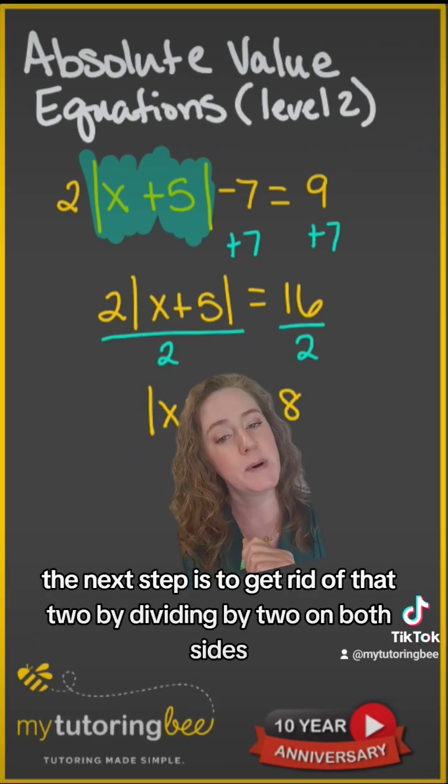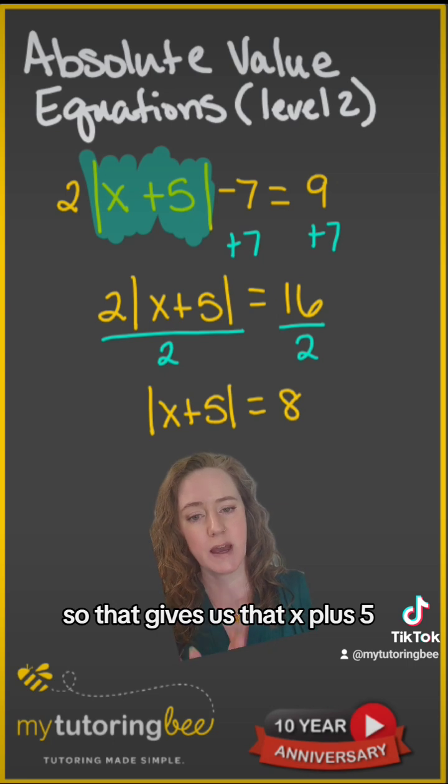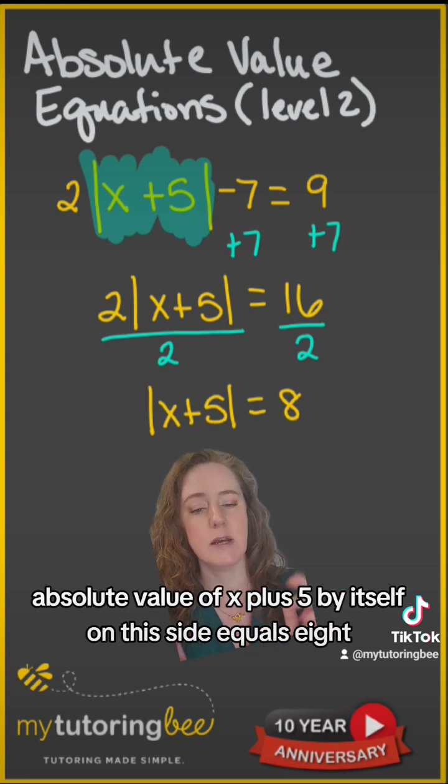The next step is to get rid of that two by dividing by two on both sides. So that gives us that absolute value of x plus five by itself on this side equals eight.